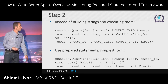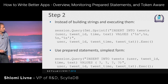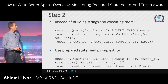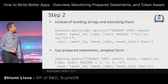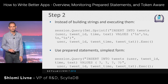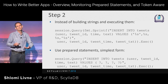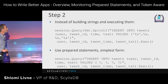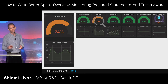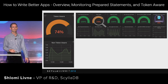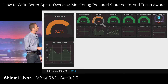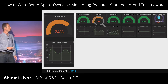In step two of the application, we fix this by changing from a simple built string to a prepared statement — building the template and then passing the argument. In GoSQL, that's the simplest form. When we fix this, the prepared statements gauge reaches 100%. But then we see the token-aware gauge is only 74%.